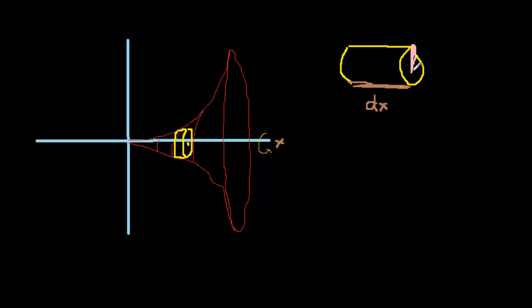And then the radius here, think about what this radius is doing. Here's my axis of rotation. And I'm going all the way up there until I hit that curve. So that radius is equal to the function, which is f of x. Or in terms of the problem that we're actually looking at, the radius is x squared.